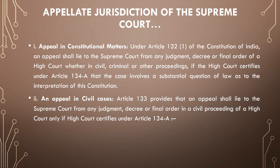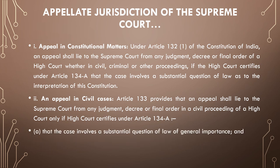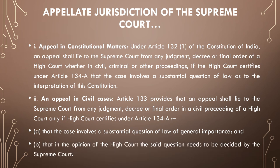The next is an appeal in civil cases. Article 133 provides that an appeal shall lie to the Supreme Court from any judgment, decree, or final order in a civil proceeding of a high court only if the high court certifies under Article 134A that the case involves a substantial question of law of general importance and that in the opinion of the high court, the said question needs to be decided by the Supreme Court.